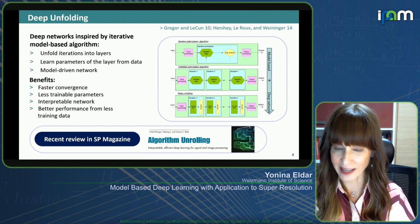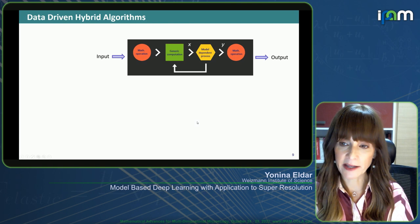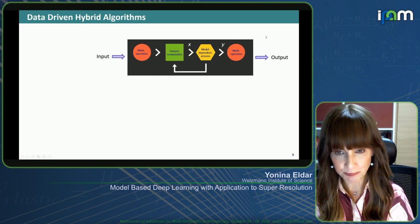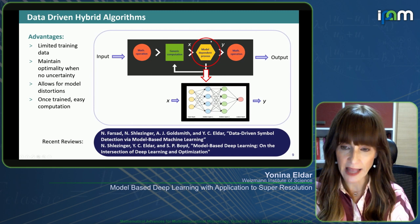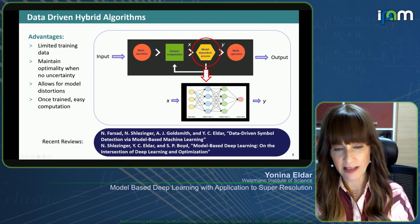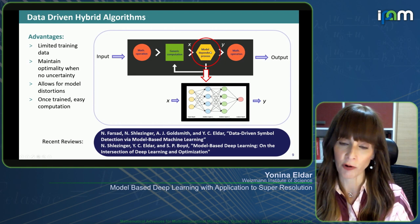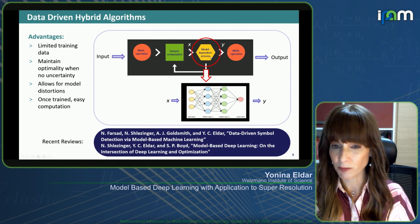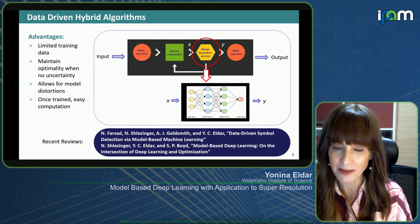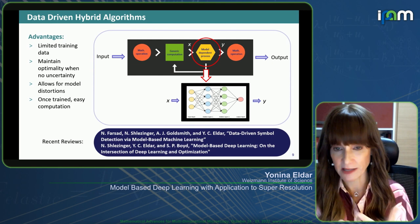The unfolding approach dates back to a beautiful paper by Gregor and LeCun, where they looked at sparse recovery problems. The idea is that you start with your optimization algorithm, write down a fixed number of iterations, and then instead of keeping the parameters fixed, you learn those from training data. This gives you a network whose layers are actually coming from your optimization solver. The plug-in approach keeps the actual algorithm for inference, but whenever there's a step that depends on the model, we use a network instead.